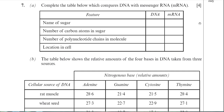The sugar in messenger RNA is ribose. Ribose is the sugar found in all the different types of RNA — your ribosomal RNA and your transfer RNA. The number of carbon atoms in the sugar: both deoxyribose and ribose sugars are pentose sugars, which means they have five carbons in their structure.